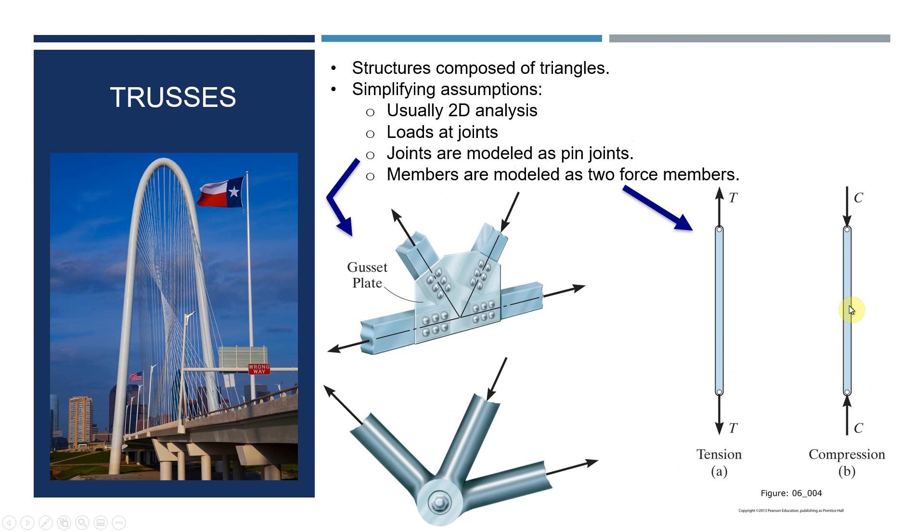So we have three-dimensional objects but they're symmetric. This truss here is the same as the back truss, so we can model it as a two-dimensional problem and we just have to look at the total strength of two trusses is twice the strength of one. Same thing with this bridge, same idea.